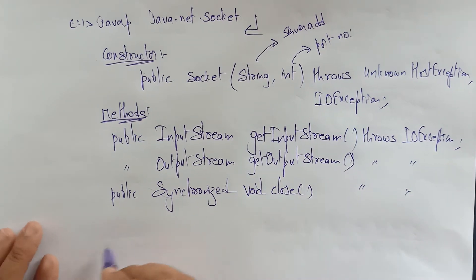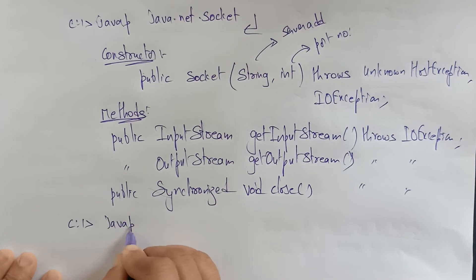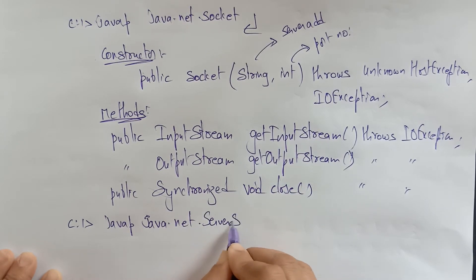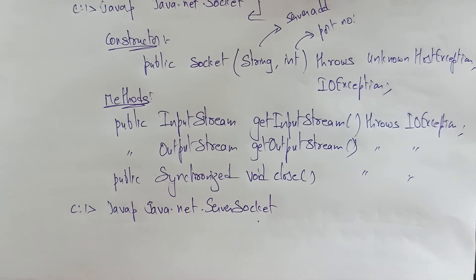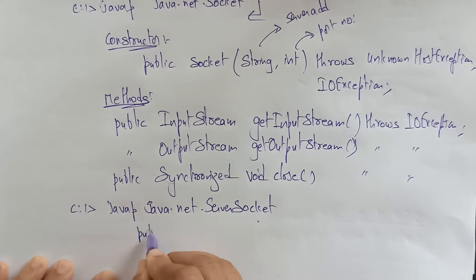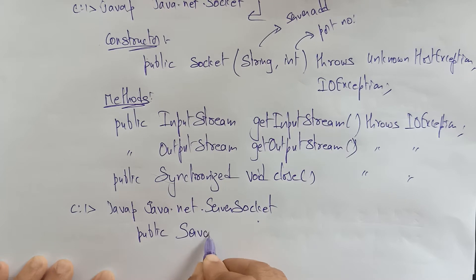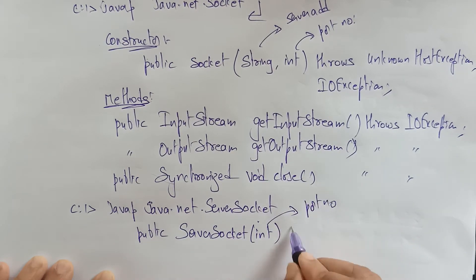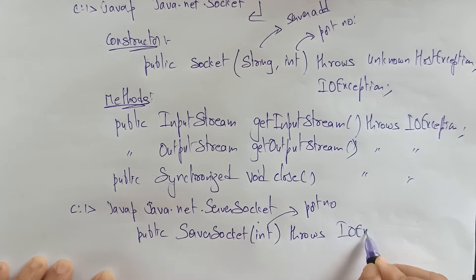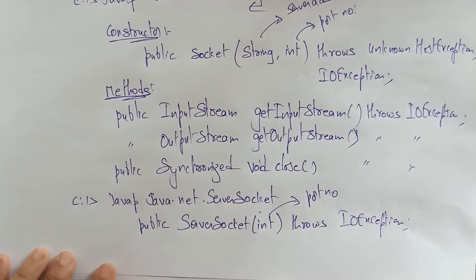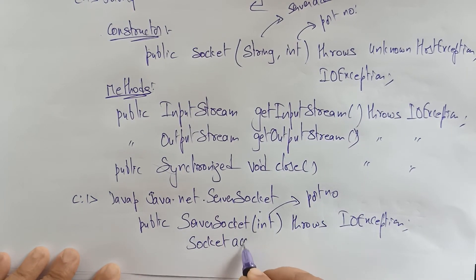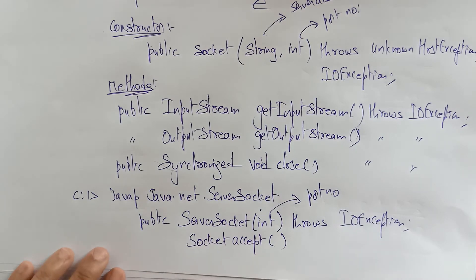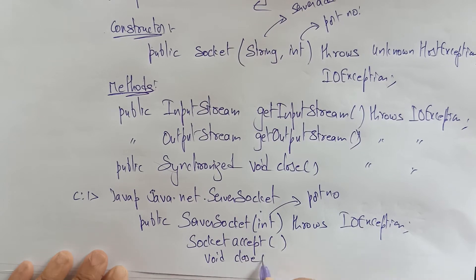For the ServerSocket, using javap on java.net.ServerSocket, the constructor I'm using is ServerSocket(int) where int is the port number, and it throws IOException. To accept data from the client you have to call the accept() method, which is present in the Socket class. Similarly, void close() throws IOException. These are all the methods I'm using in this program.